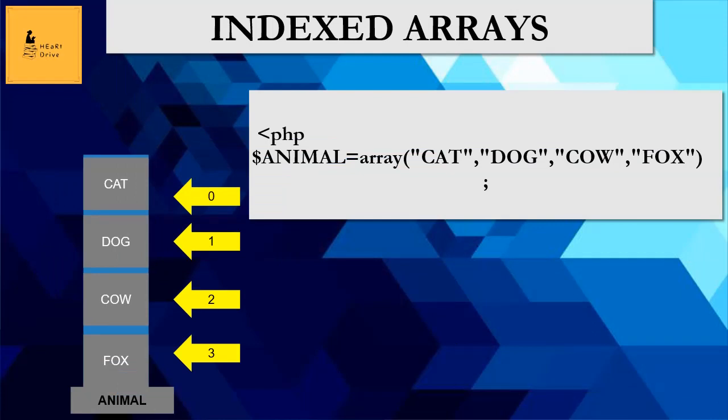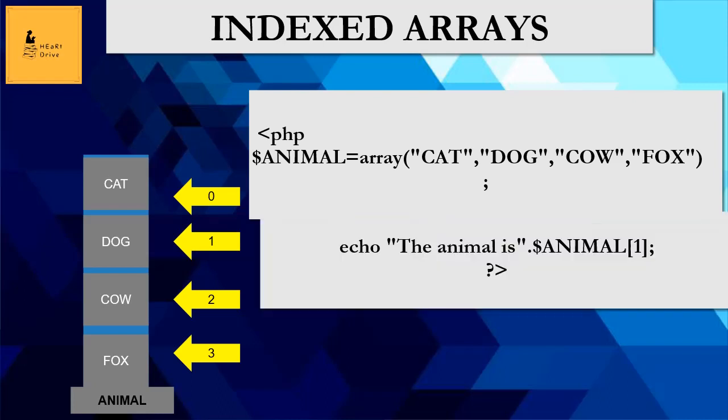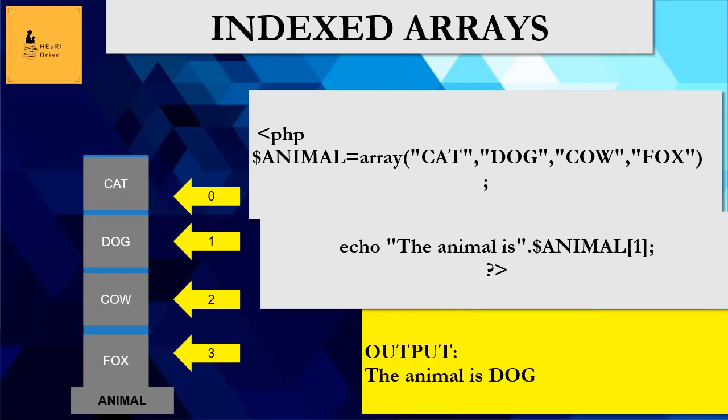Let's write the code for this array: $animals = array(), with all the elements of the animals array inside the braces. Now, if we want to display 'dog', we give the command echo "The animal is $animals[1]". Since the position of dog is 1, we get dog displayed in the output.